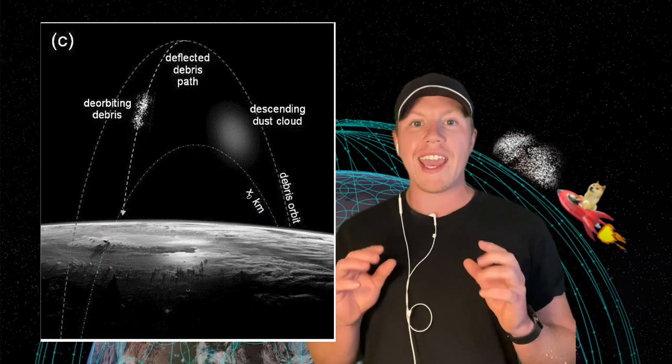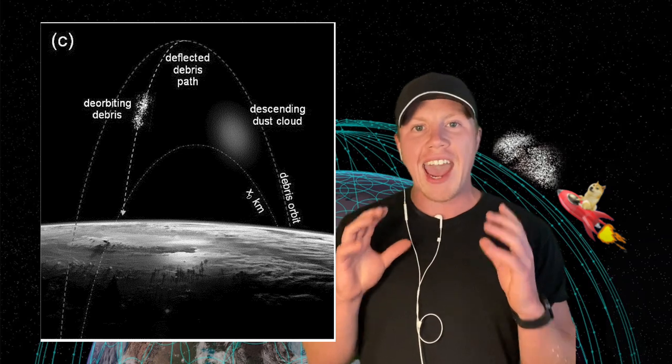And then what happens is the tungsten powder would hit the debris and essentially create like an atmosphere because the tungsten powder, it's so fine that it essentially acts as an atmosphere and not as like bullets hitting the satellite pieces. So it essentially acts as an atmosphere and creates drag in that area for all the satellite debris to slow down and decrease their deorbit time.